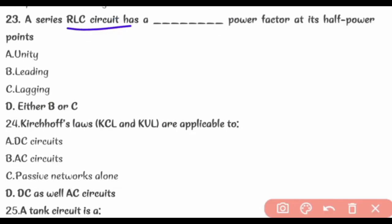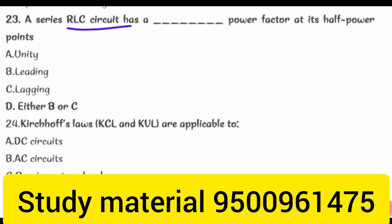A series RLC circuit has a 0.707 power factor at its half power points, either leading or lagging.